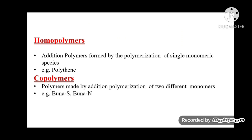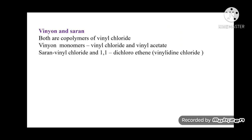Homopolymers are formed by polymerization of a single monomeric species; example is polythene. Copolymers are made by addition polymerization of two different monomers; examples are Buna-S and Buna-N. Vinyon and Saran are both copolymers of vinyl chloride. Vinyon's monomers are vinyl chloride and vinyl acetate; Saran's monomers are vinyl chloride and 1,1-dichloroethene (vinylidene chloride).